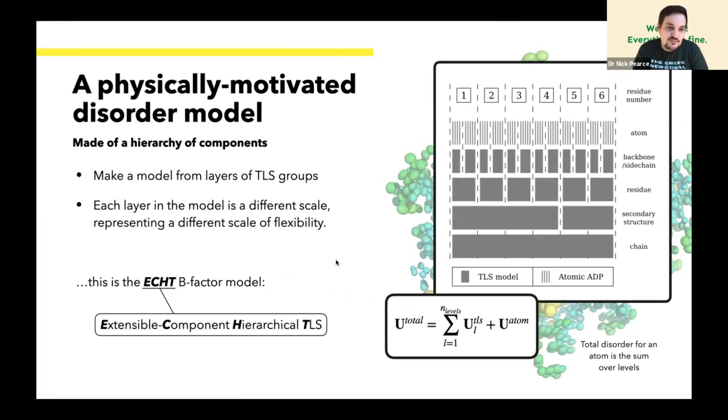We have a hierarchy of motions which all sum together. So our proposal was, why don't we make a disorder model which is a hierarchy of components that all sum together. For simplicity, the model we've chosen to use is TLS, so these are all rigid body components. You can now define an arbitrary hierarchy of motions and disorder components in your crystal. Starting at the bottom with one TLS group per chain to describe molecular motion, you can add a group per secondary structure, a group per residue, and even go down to the levels of backbone and side chain motions, and then of course you have an atomic component on top.